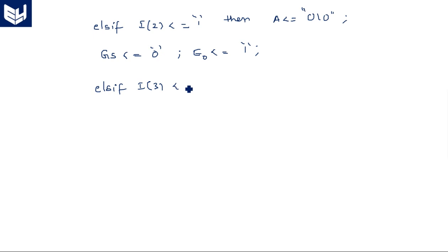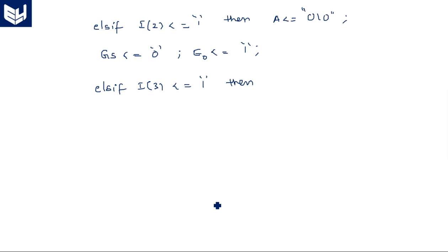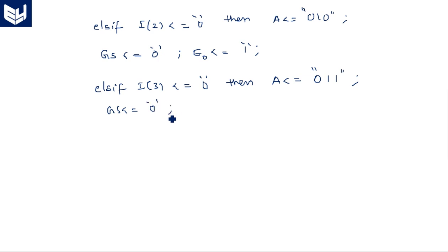Elsif I(3) = '0' — because these are active-low pins, activated means '0' — then: I(2) is '0' and I(3) is also '0', so A is assigned with "011", group_select is assigned with '0', and E0 is also assigned with '1'.